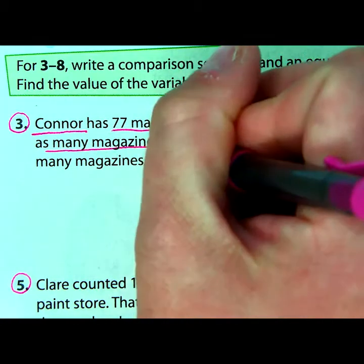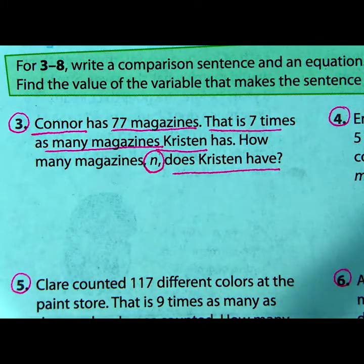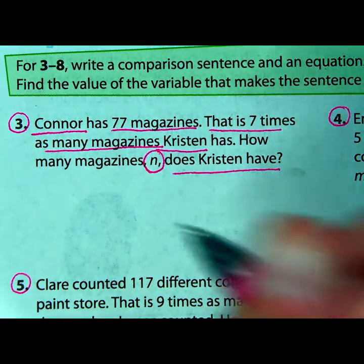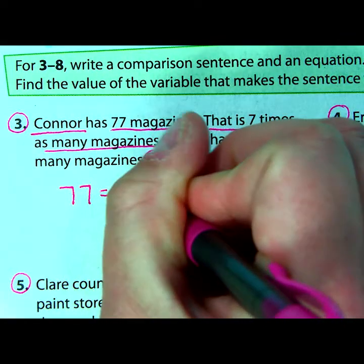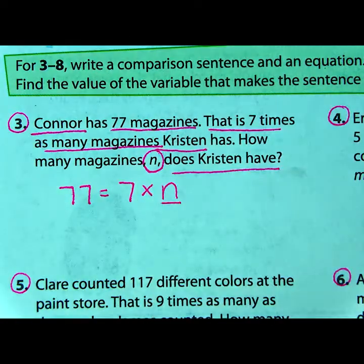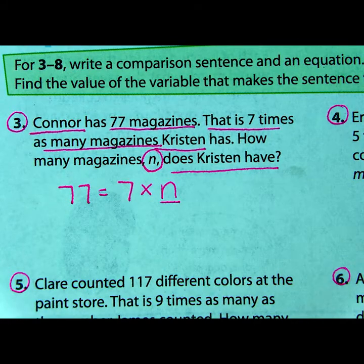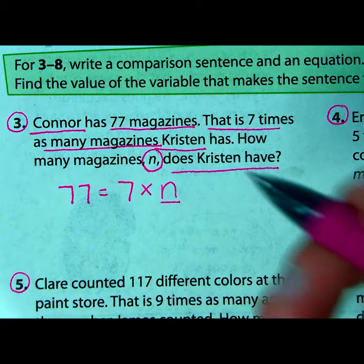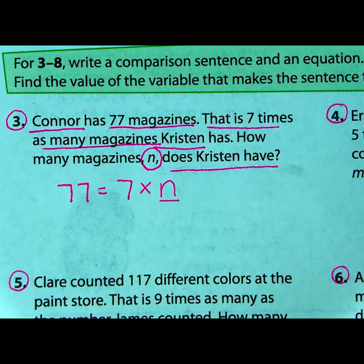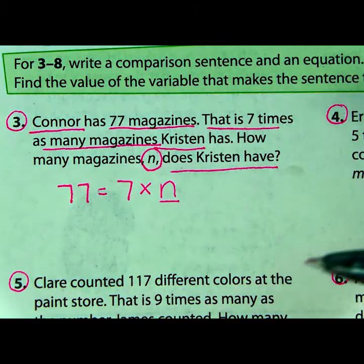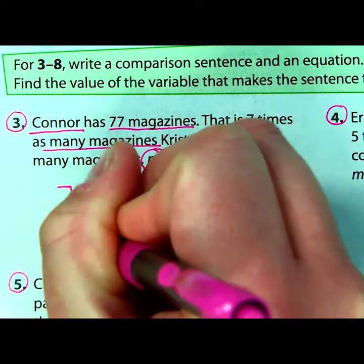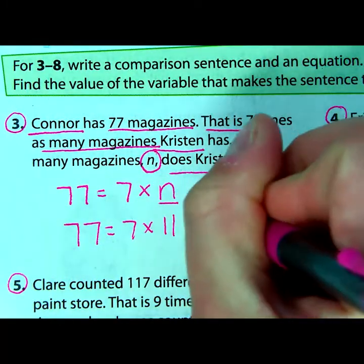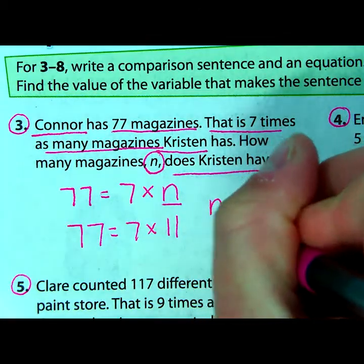How many magazines, n — so it's the variable they want us to use — does Kristen have? The unknown here is the number that Kristen has. We've been told that Connor has 77, and that is seven times as many as Kristen, which they told us to use n for the unknown. So now we're thinking of a missing factor problem, and we could use division. Many of you probably know this basic multiplication fact: seven times 11 equals 77. So n is equal to 11 magazines. That is how many Kristen has.